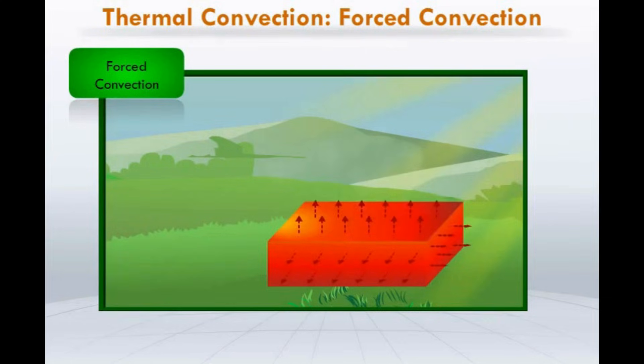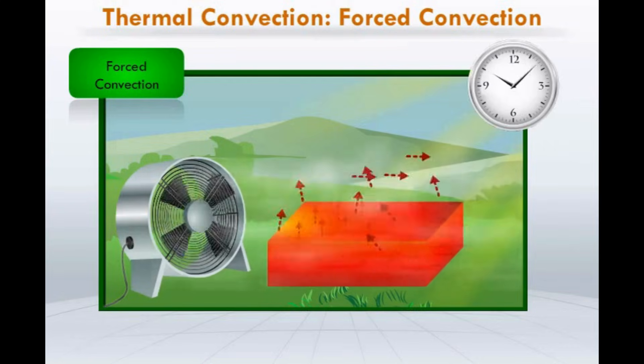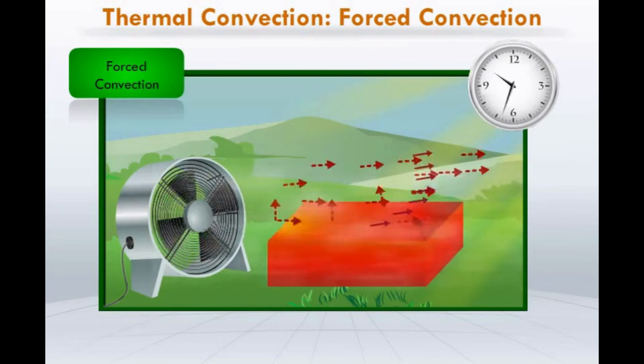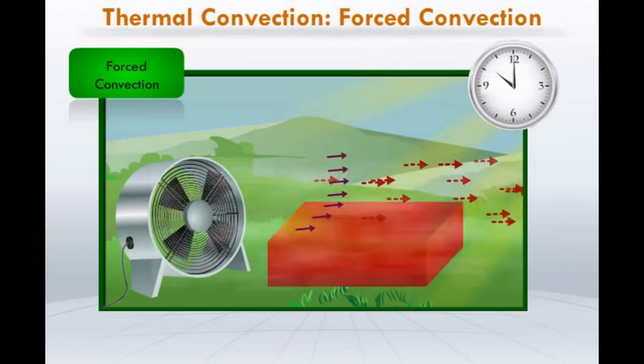Let's consider the same hot slab example. To cool this slab faster, let us place a blower near it. We see that air from the blower blows over this slab at a faster rate, increasing its rate of convection.